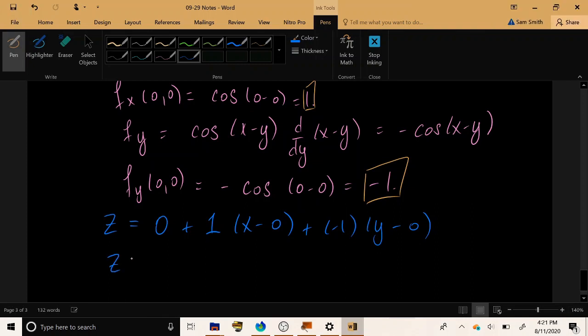And after we plug everything in, simplify, we get that the equation of the tangent plane is that z is equal to x minus y.